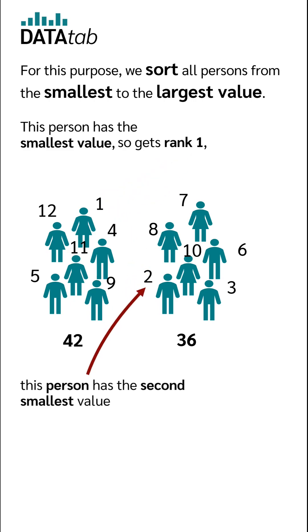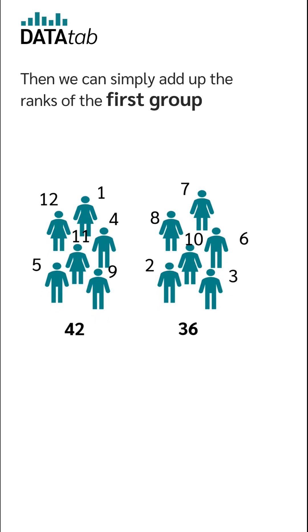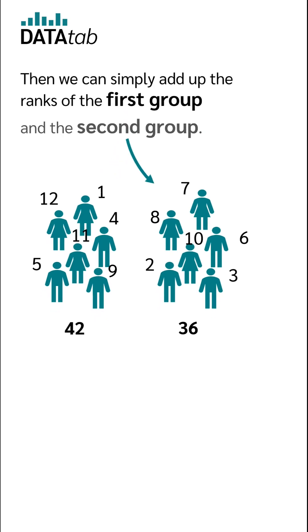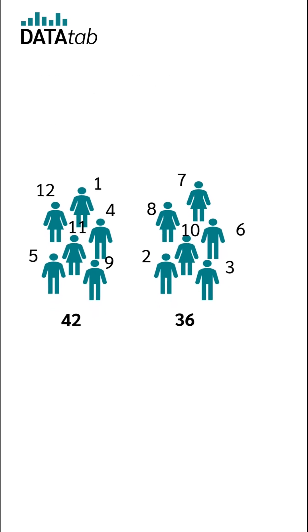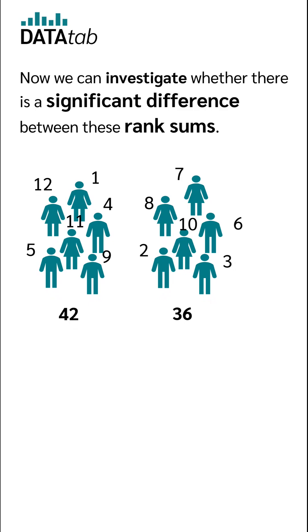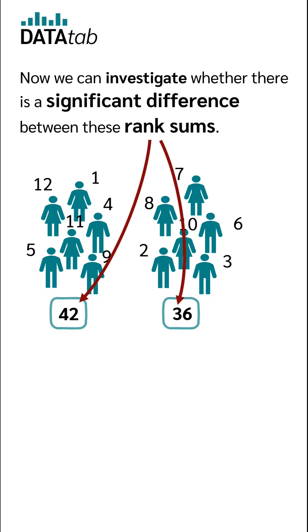This person has the second smallest value, and so on and so forth. Then we can simply add up the ranks of the first group and the second group. Now we can investigate whether there is a significant difference between these rank sums.